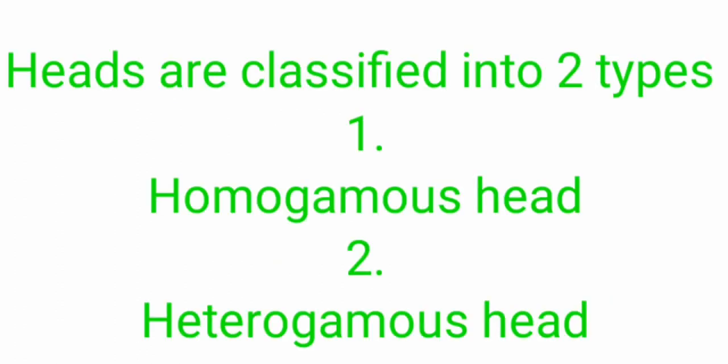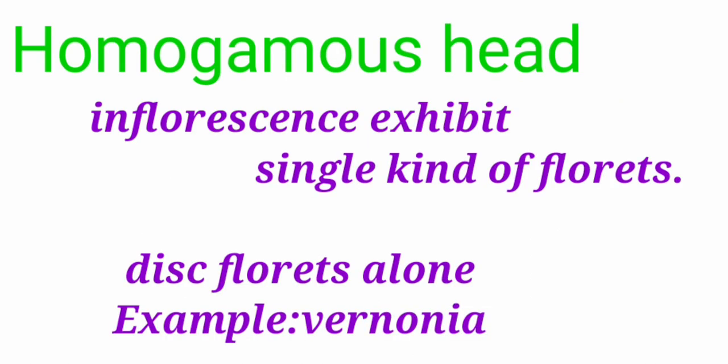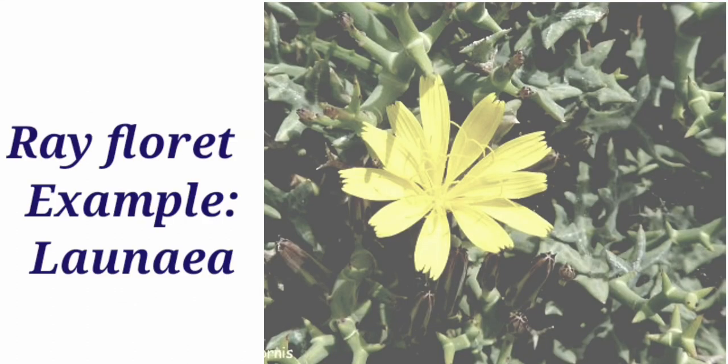Head inflorescence is classified into two types. First one is the homogamous head and next one is the heterogamous head. Here in homogamous head the inflorescence exhibit single kind of florets. Either it may be disc florets or ray florets. Example for disc florets is Vernonia and the example for ray florets is Launaea.